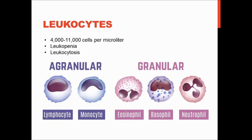Basophils are also involved in the allergy response because they hold histamine, releasing it to cause part of the inflammatory response during allergies. Neutrophils are the most abundant of the white blood cells and they fight bacteria. When you have a productive cough and the sputum is yellow or green, that's due to dead neutrophils — it means it's a bacterial infection. If the sputum is clear or white, it's usually viral in origin, and that would be dead lymphocytes.